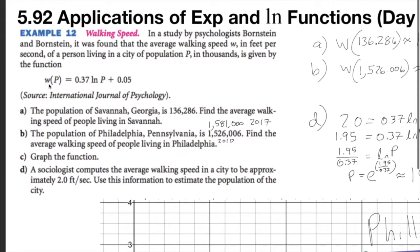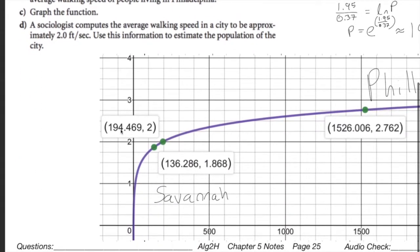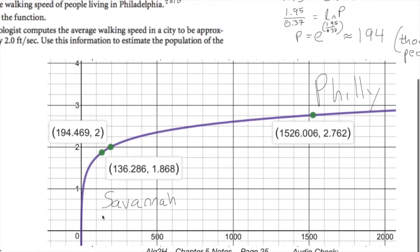We've got here walking speed. In a study by psychologists, we found the average walking speed w, here is the output, is a function of population. So basically what they're saying is you've got the input here of number of people. This is in thousands, so 500,000 is 1,000 or a million. This is a million people mark, two million people mark here.